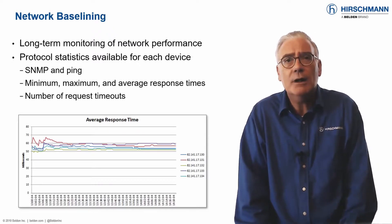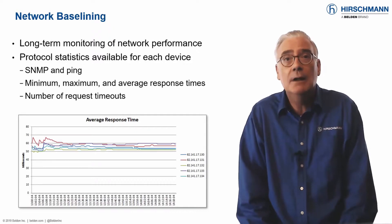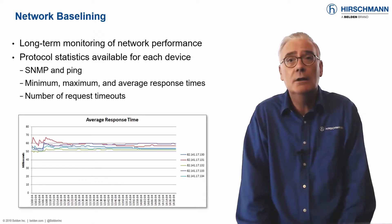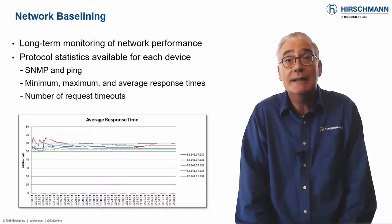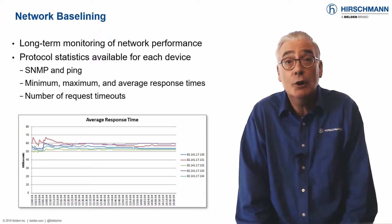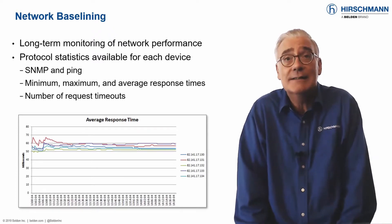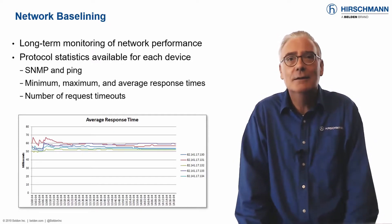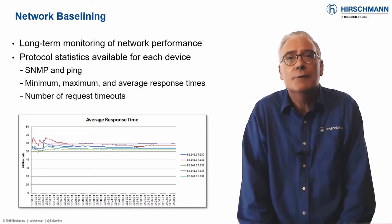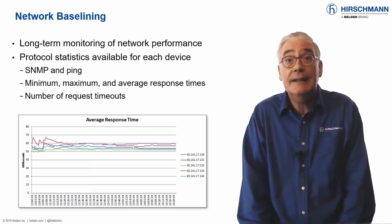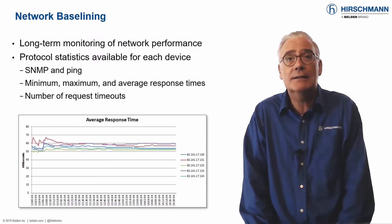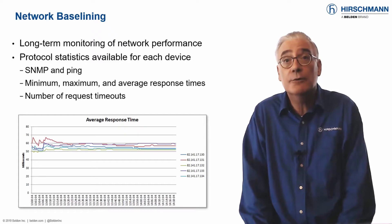Network baselining means monitoring the minimum, average, and maximum device response times across a network. Fluctuations in these values could indicate changes in network utilization, or changes in the end devices — in other words, things that you need to know about. Your devices do not need to offer this information; Industrial HiVision will calculate it for you. Just select the devices you want to baseline, and you will be well on your way to having a deep understanding of your network's long-term performance.